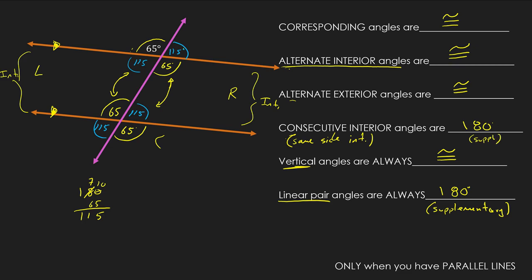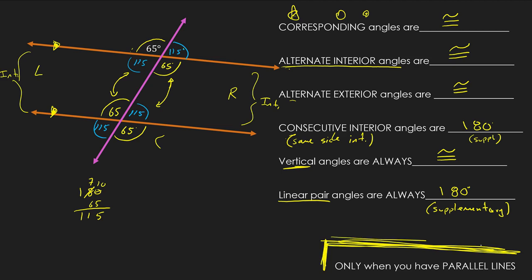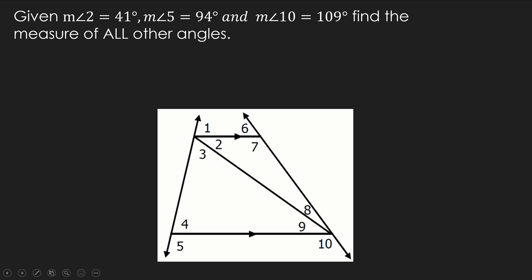One important thing: this chart is only true when the lines are parallel. If the lines are not parallel, we still have corresponding, alternate interior, alternate exterior, and consecutive interior angle pairs — but the congruence and supplementary rules do not apply. We can still identify all of these angles; the only difference is these properties do not apply if the lines are not parallel.